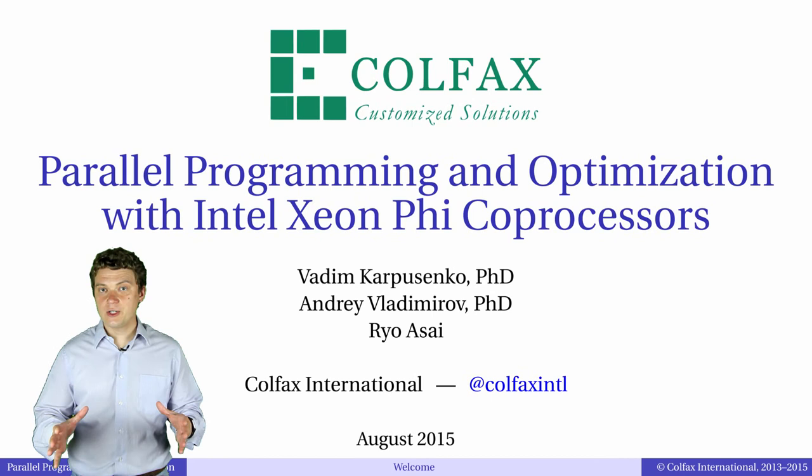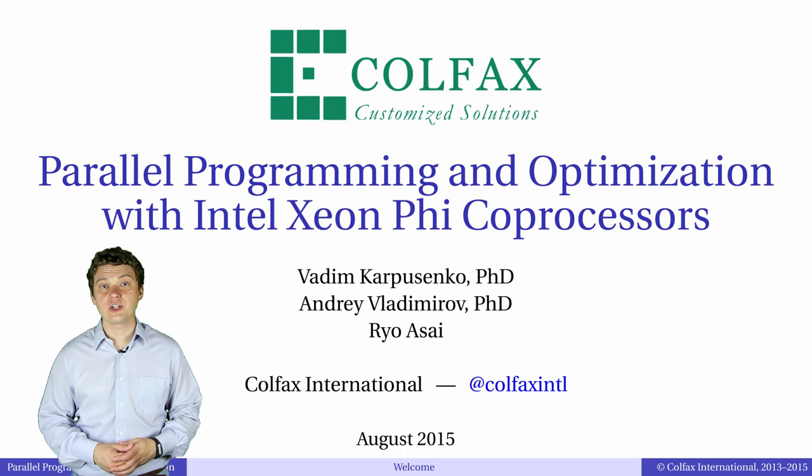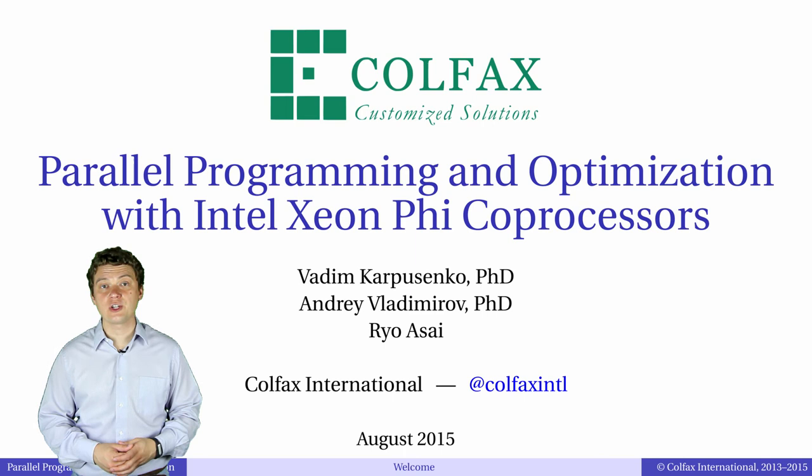Contiguous access to memory, or in other words, unit-stride access to data in vector operations, is the rule of thumb for high-performance computing. If you have any questions, leave them in the comment section below the video. Thank you for tuning in, and I hope to see you in the next episode.